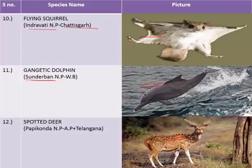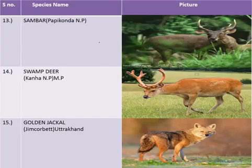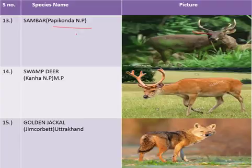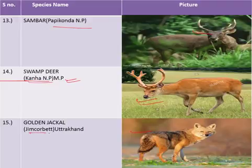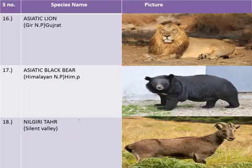The spotted deer are key species of Papikonda National Park, on the border of Andhra Pradesh and Telangana. The sambar are native to Papikonda National Park as well. The swamp deer are key species of Kanha National Park in Madhya Pradesh. The golden jackals are key species of Jim Corbett National Park in the state of Uttarakhand.